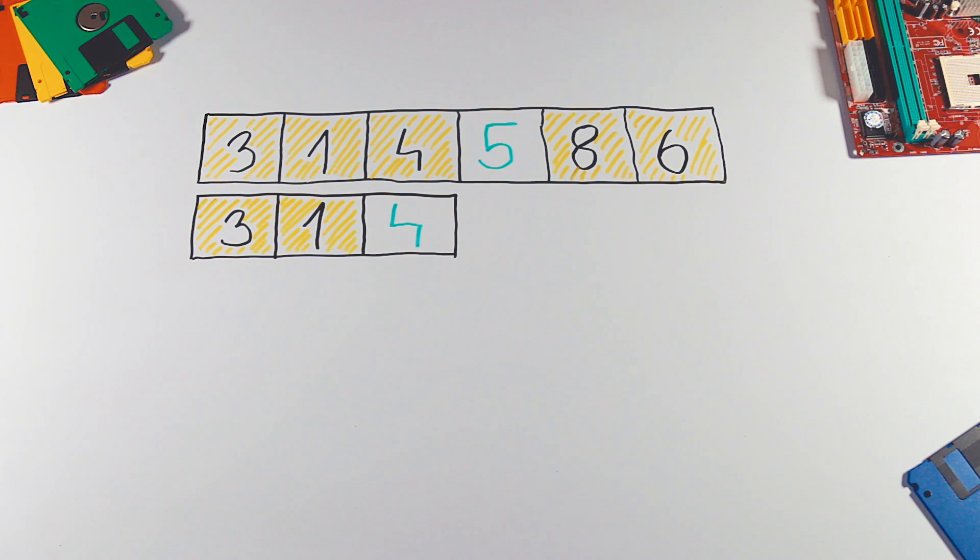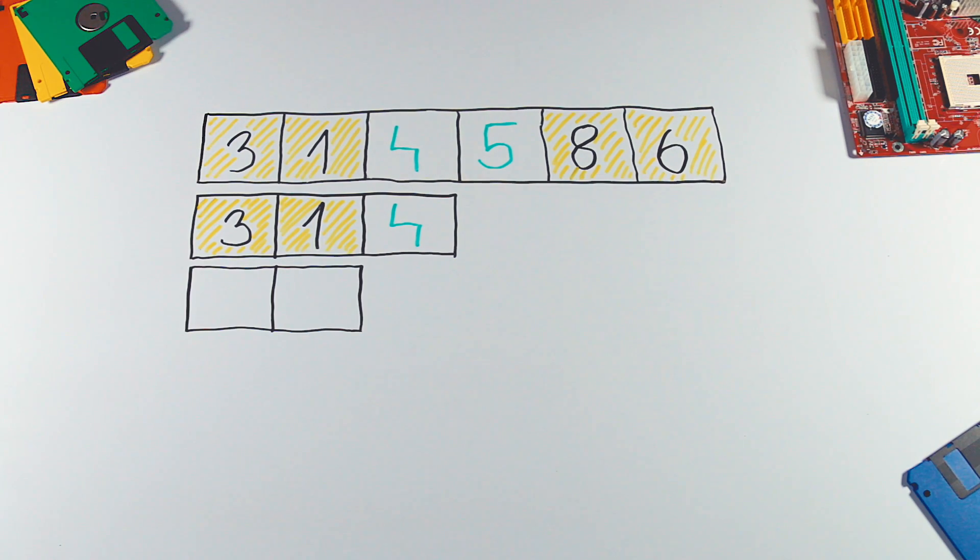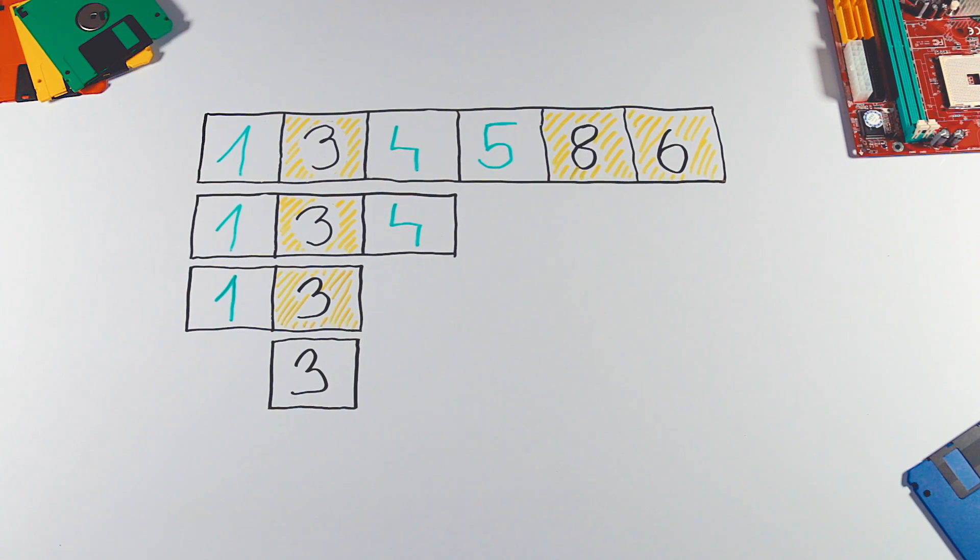Pivot is in its final position and we continue with new sub-array. We stop the recursion when sub-array contains only one element.